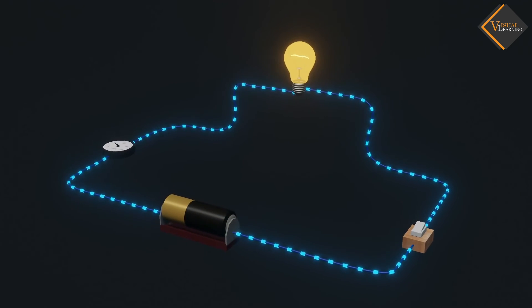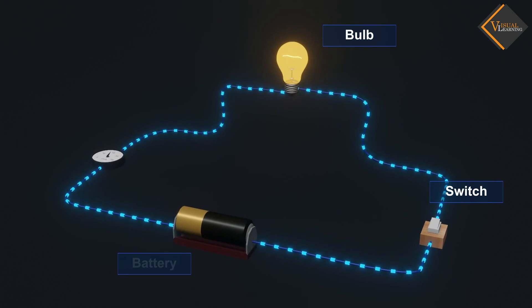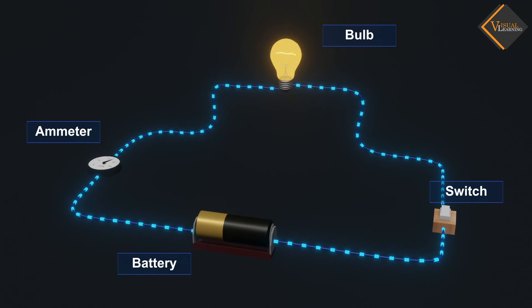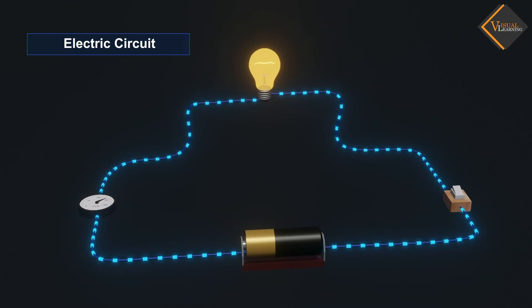Here, we can see a bulb, a switch, a battery, and an ammeter are connected in series. This continuous path of electric current is known as electric circuit.